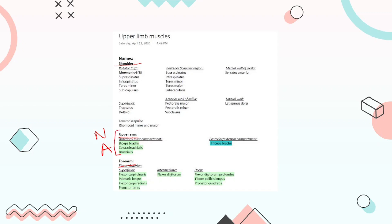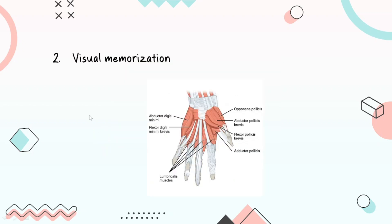So the second tip I have is visual memorization, and do not underestimate this. Because anatomy is not physiology, right? You are not required to remember some concept about membrane potential. Anatomy is really volatile and you are probably not going to remember most of the stuff for your second year.